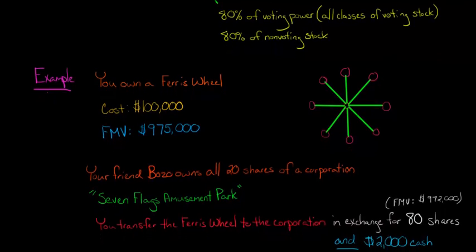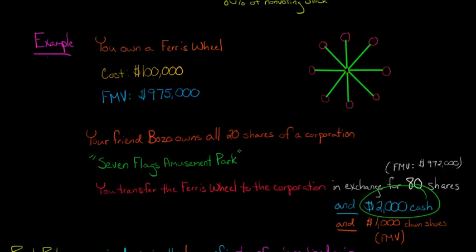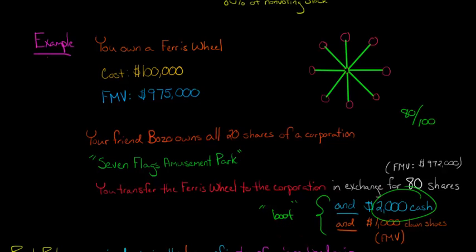But you're going to get the 80 shares plus some things other than those shares — you're going to get $2,000 cash and $1,000 worth of clown shoes. We call these things boot: property you're receiving other than the stock in the corporation. So for it to be Section 351, you're transferring property — a Ferris wheel — in exchange for corporation stock, you're getting 80 shares, and you own 80 out of 100, so this qualifies as a Section 351 transaction. The boot will be relevant when we calculate your basis in those 80 shares.